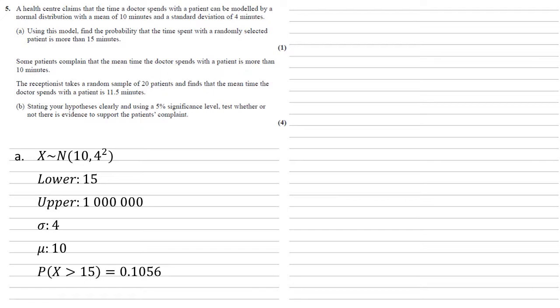Some patients complain that the mean time the doctor spends with a patient is more than 10 minutes. The receptionist takes a random sample of 20 patients and finds that the mean time is 11.5 minutes. For Part B, stating hypotheses clearly and using a 5% significance level, we test whether there is evidence to support the complaint. Our null hypothesis is that the mean is 10, and our alternative hypothesis is that μ is greater than 10.